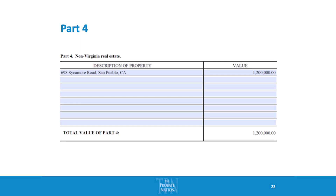For non-Virginia real estate, which is in part four — that includes all real estate not located in Virginia. Whether or not you have power of sale, it all goes in part four. You simply list the street address of the asset and then either the appraised value or the tax assessed value closest to the date that you received it from the estate.